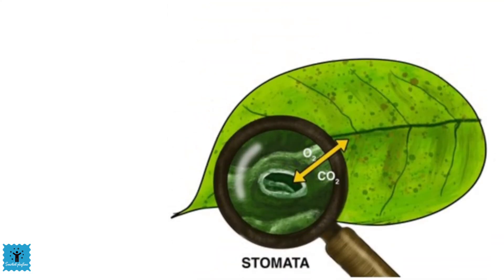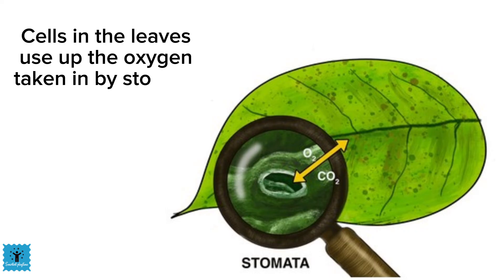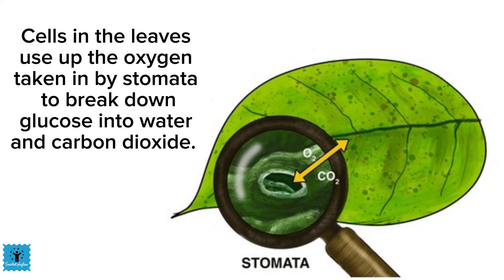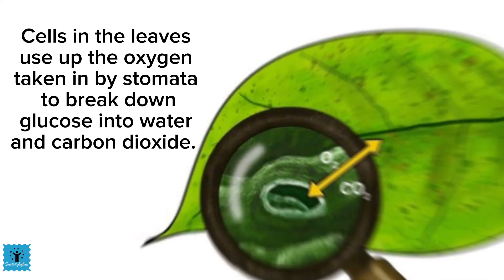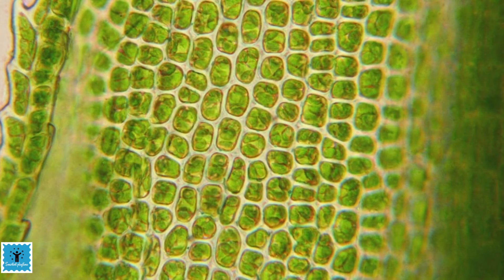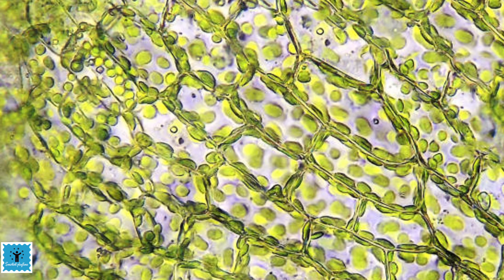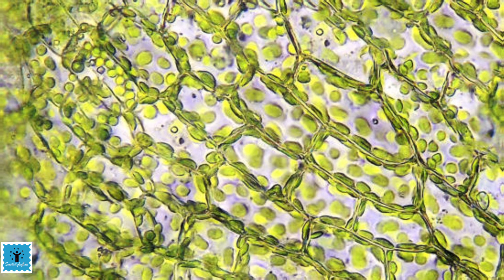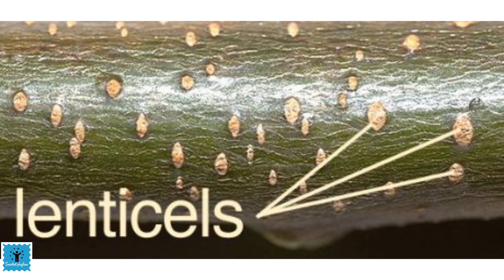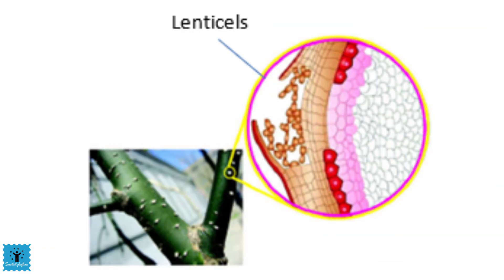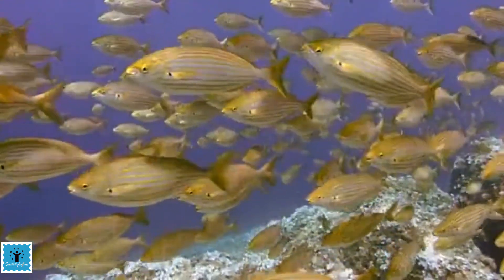Microscopic pores in leaves called stomata help in the exchange of gases. Cells in the leaves use the oxygen taken in by the stomata to break down glucose into water and carbon dioxide. In stems, air diffuses into the stomata and travels through various regions of the cell, and the released carbon dioxide is distributed back through the stomata. In higher or woodier plants, lenticels are known to perform gaseous exchange.